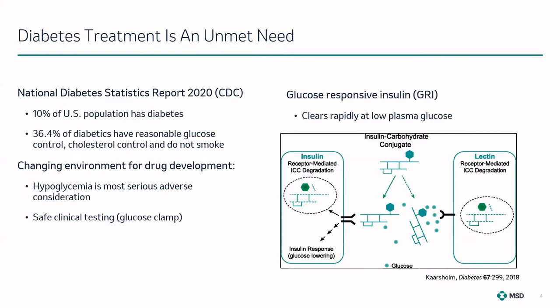Many treatments are available and the understanding of diabetes is evolving. Hypoglycemia has been recognized as an important adverse consideration during drug development. The current paradigm for early testing of glucose control is the glucose clamp — a very complex clinical protocol — designed to protect volunteers from large surges in plasma glucose levels.